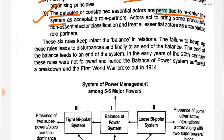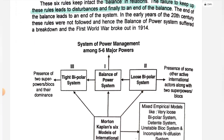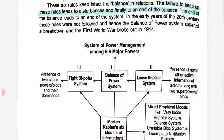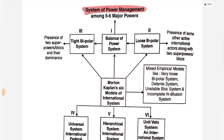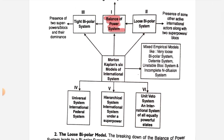Kaplan also said that the failure to keep these rules leads to disturbance and finally to the end of the balance of power. If these six rules are not followed, it creates disturbance at the international level and the balance of power ends. For example, when these principles were not followed, World War I broke out in 1914. You should draw these six principles as a model in your paper.